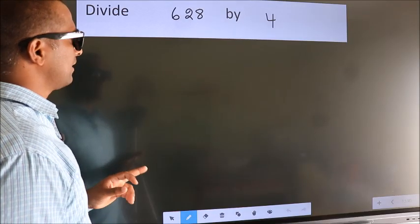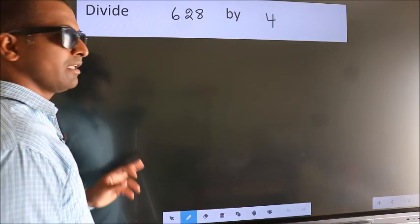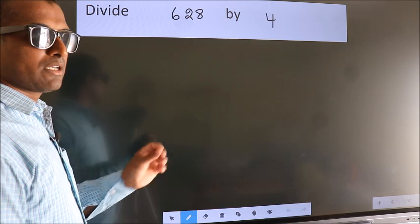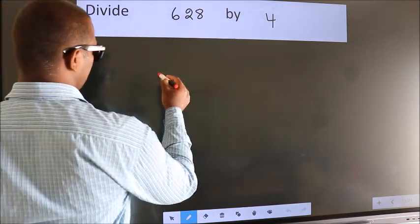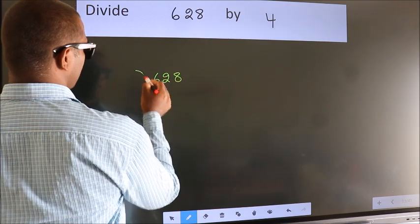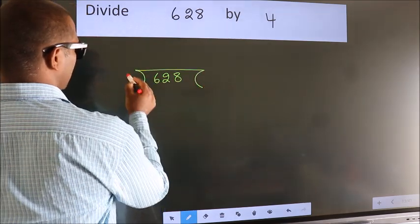Divide 628 by 4. To do this division, we should frame it in this way. 628 here, 4 here.